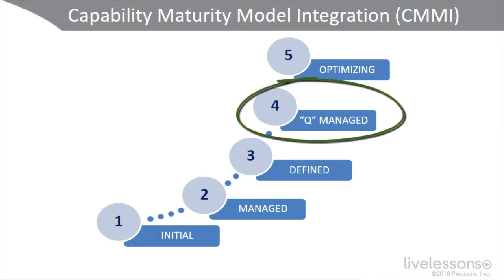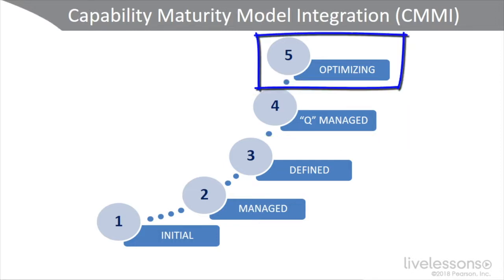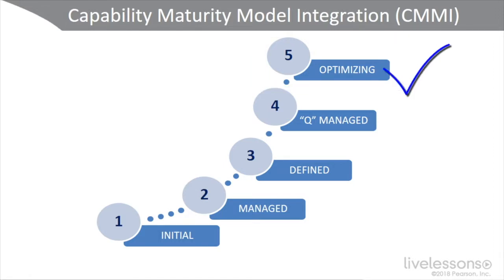Level four is quantitatively managed. We're using measurable metrics and have enhanced visibility. The reporting tools are delivering valuable data, which becomes information, which becomes wisdom. Our processes are measured, controlled, and to a certain degree automated. Level five, the highest level, is optimizing — where everything is in place. You have a comprehensive implementation of your security controls: administrative, technical, and physical. You're now just focusing on continual improvement.